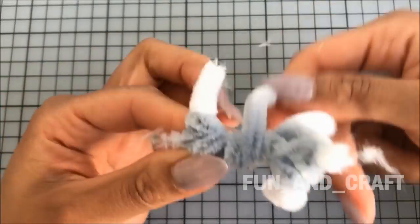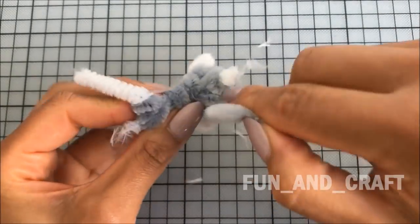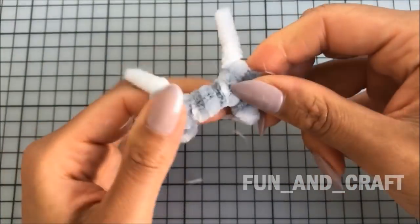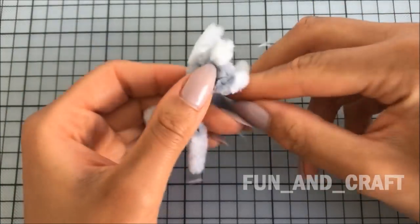When shaping the body, you want to focus on the chest and the belly because this part is a lot bigger. Also use hot glue every now and then to secure the pipe cleaner.